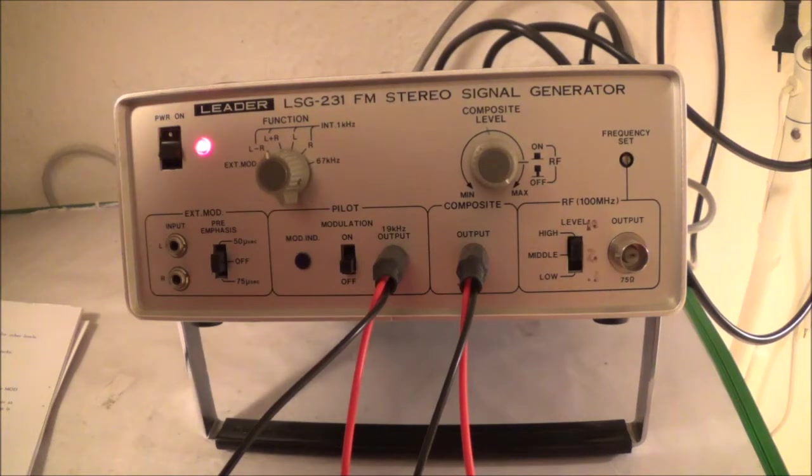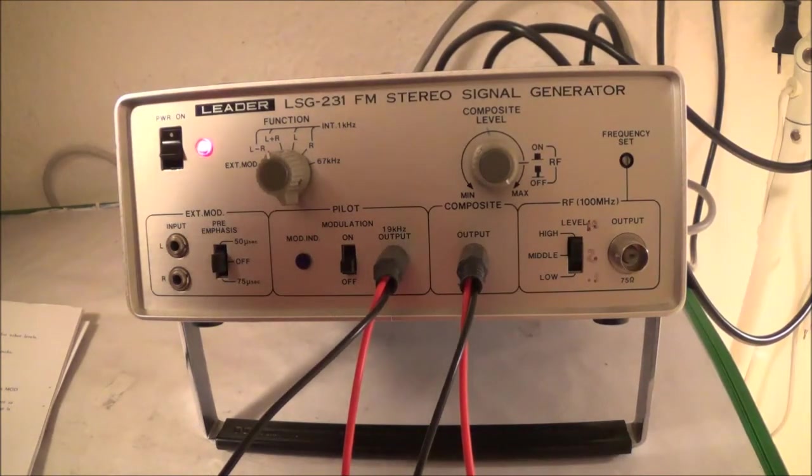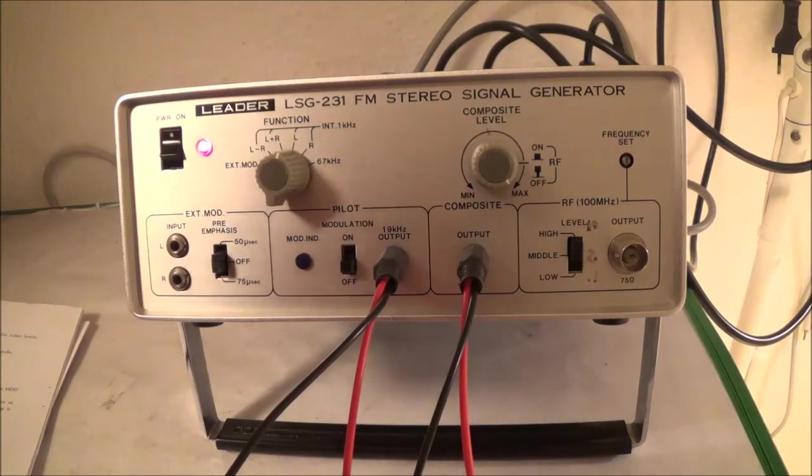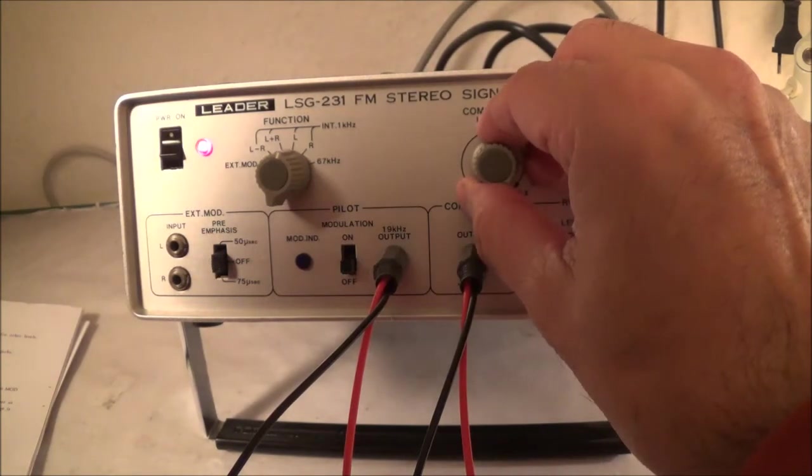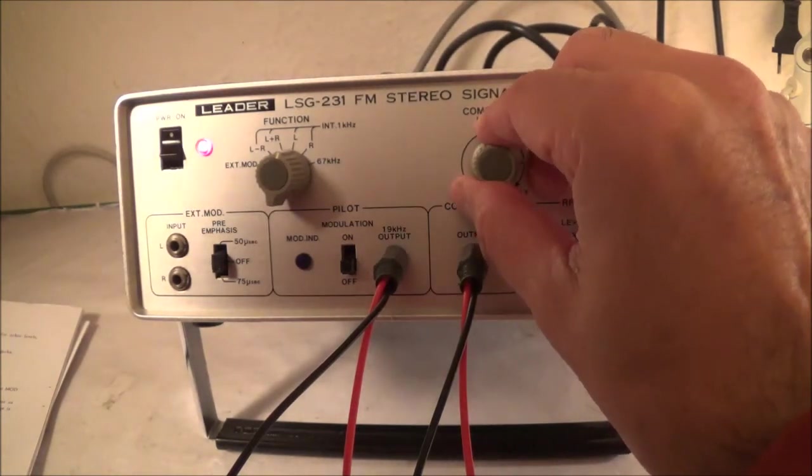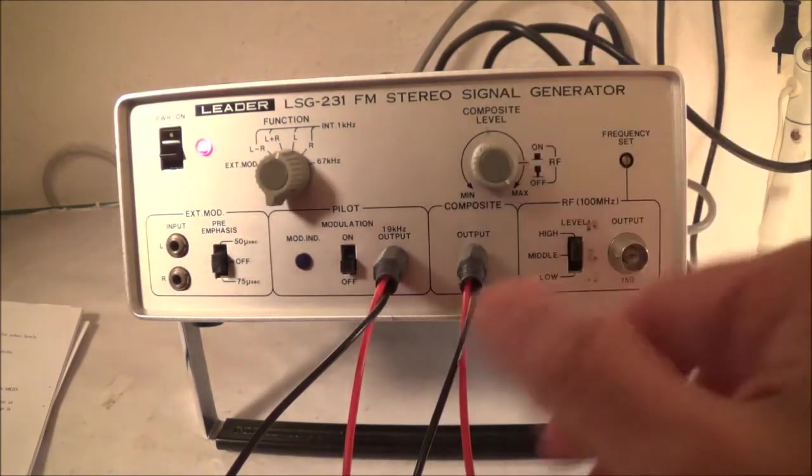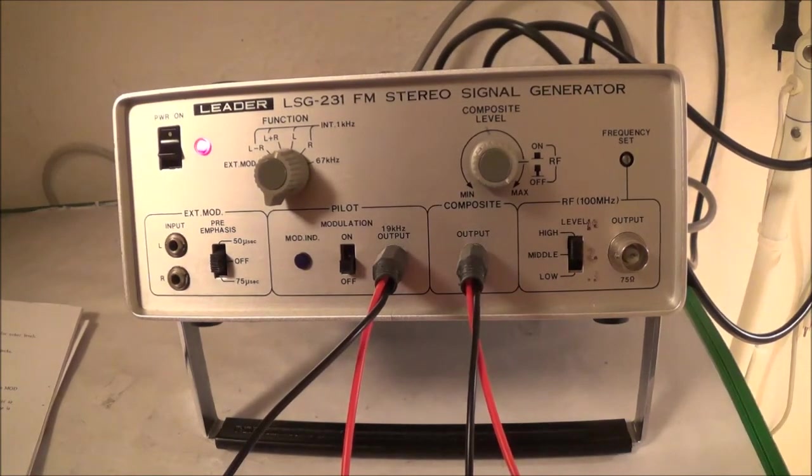Okay, next we check the left and right channel separation. And the channel separation is supposed to be over 50 decibels at 1 kHz. And we need to set the function switch to L or R. The pilot modulation switch to off. The composite level to max. The control knob to RF off. And the scope controls for waveform display.